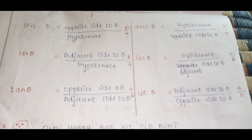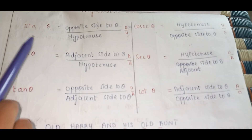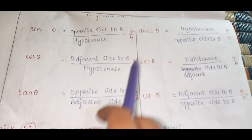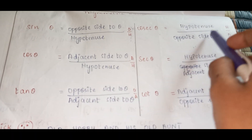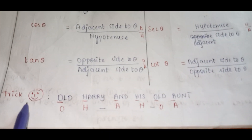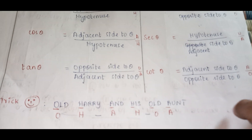So we have learned six trigonometric ratios: sin, cos, tan, cosec, sec, and cot. We also learned the formulas for each ratio and a simple mnemonic — 'Old Harry and His Old Aunt' — to remember them easily.